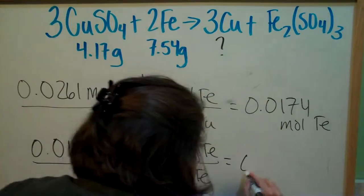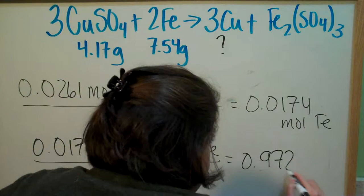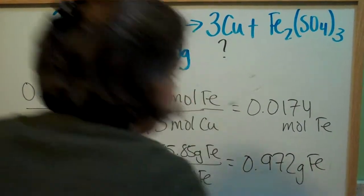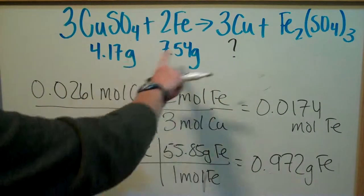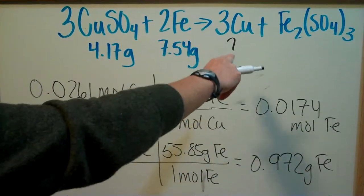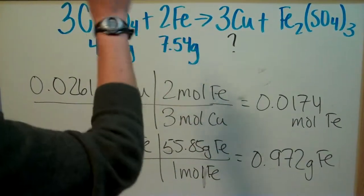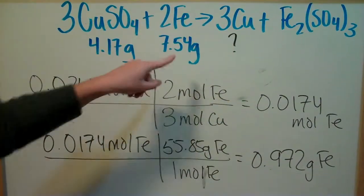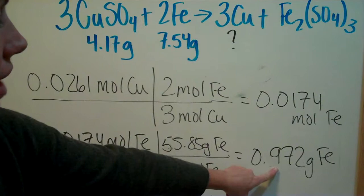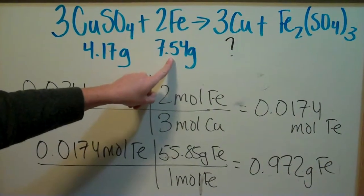And when you do the math, you get 0.972 grams of iron. So that's how many grams of iron are going to be necessary to complete this reaction, right? We need 0.972 and we have 7.54.